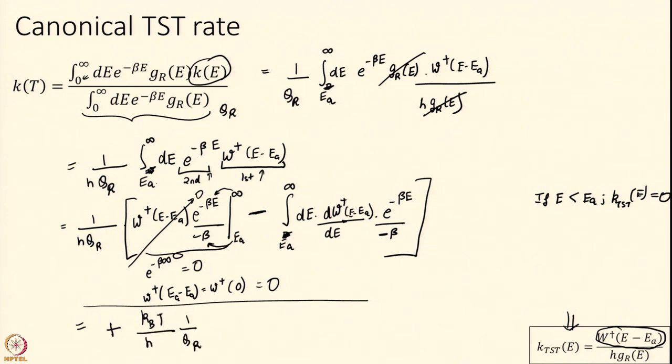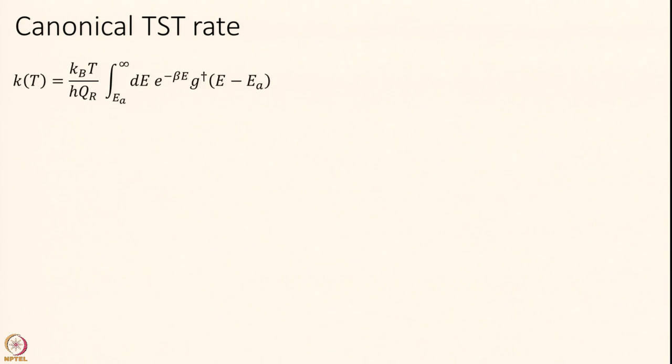What is DW dagger over DE? DG. You can look that in the last module as well. DW over DE is the density. I get this expression.